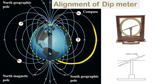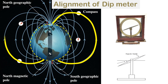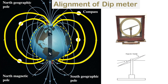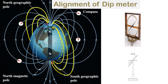Here the magnetic meridian is in the plane of the paper and the dip meter should also be placed in the plane of the paper so that we get the correct values. If it is placed at any point along this line then it should be turned and aligned with the magnetic meridian to obtain direct readings.